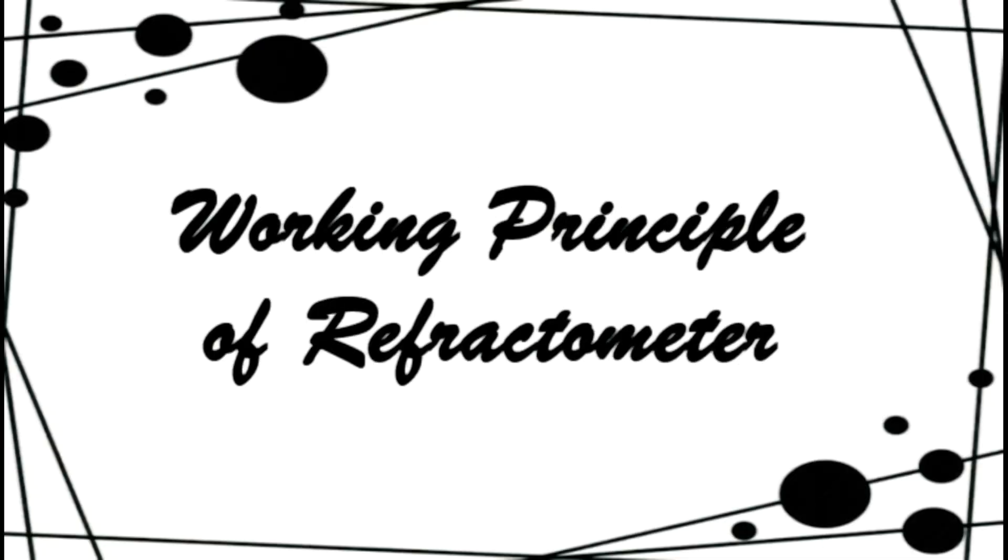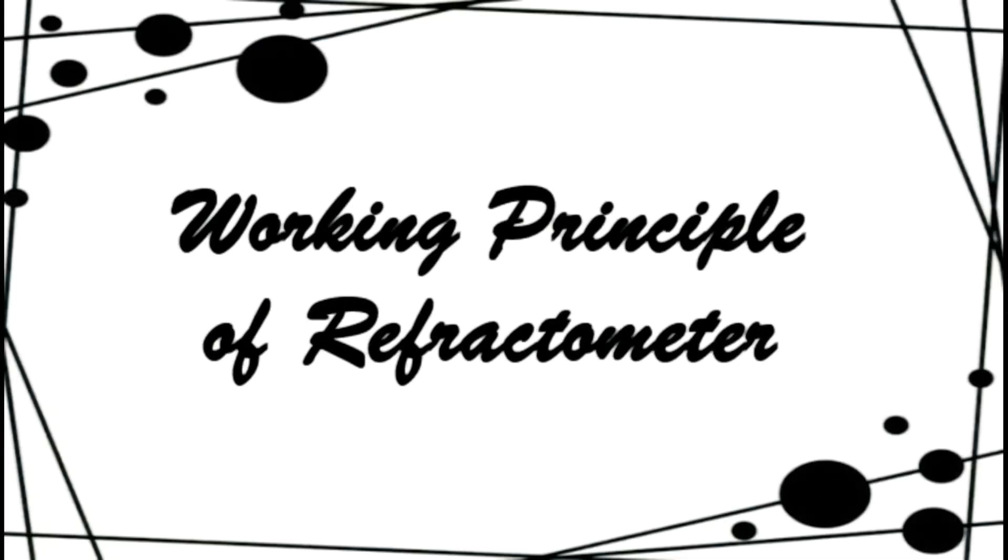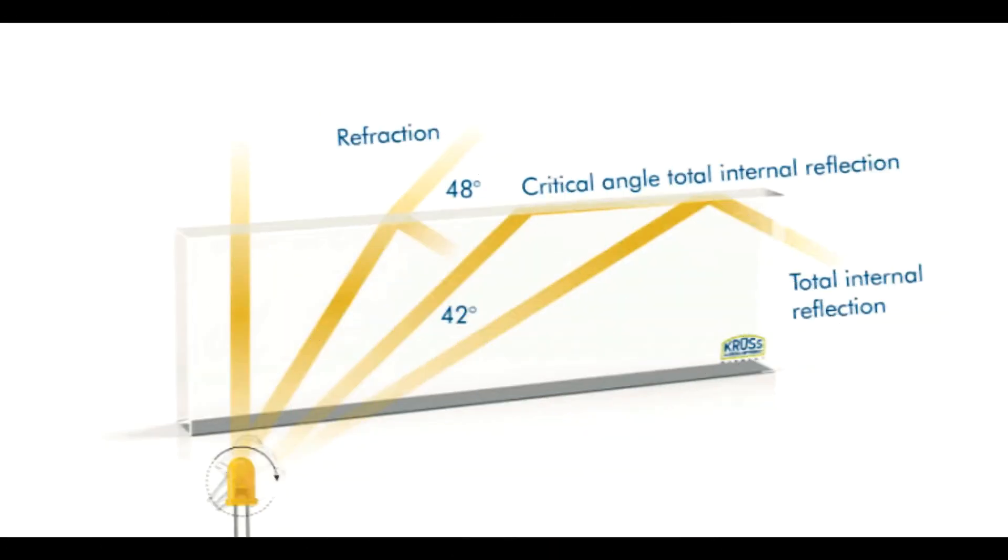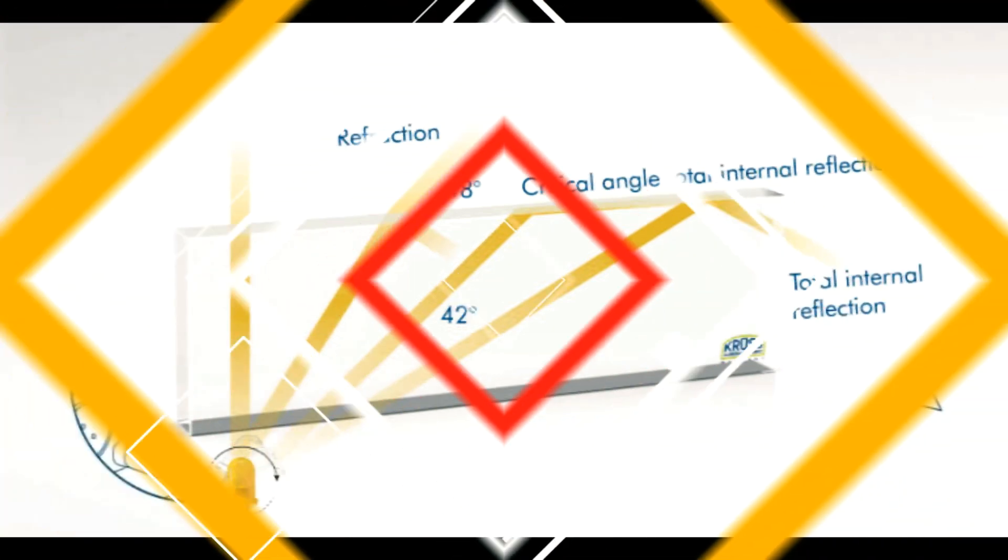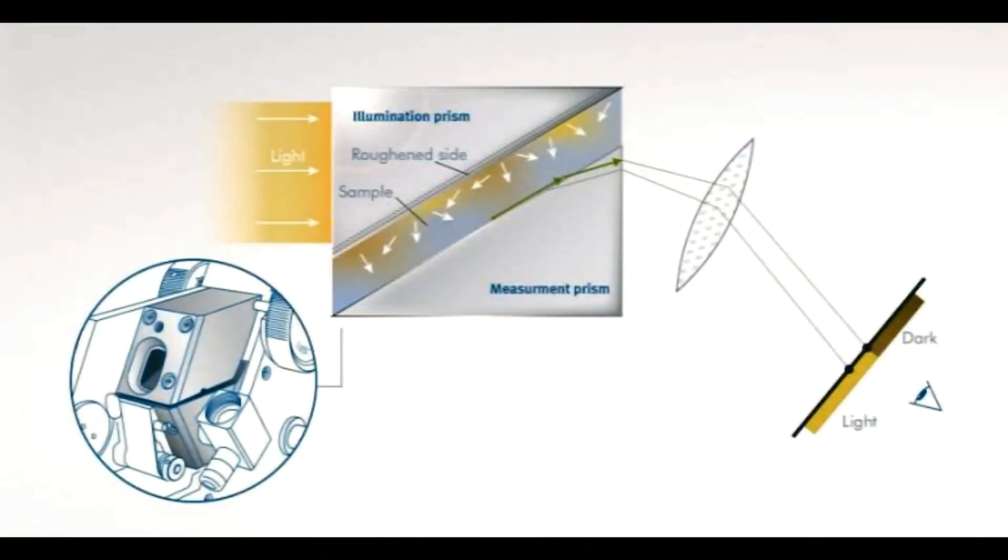Once you are familiarized with the parts of refractometer, now it's turn to understand its working principle. The Abbe refractometer depends upon the total internal reflection, so it is based on the measurement of critical angle. Here, a convergent beam strikes the surface between the unknown sample of index n and a prism of known index n prime.